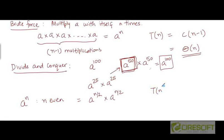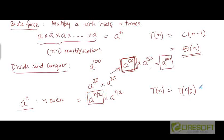So if T(n) is the running time of the algorithm that computes a to the power n, then T(n) can be expressed as the amount of time it takes to solve the sub-problem of half the size, plus the amount of time it takes to multiply that number with itself, which is a constant amount of time.